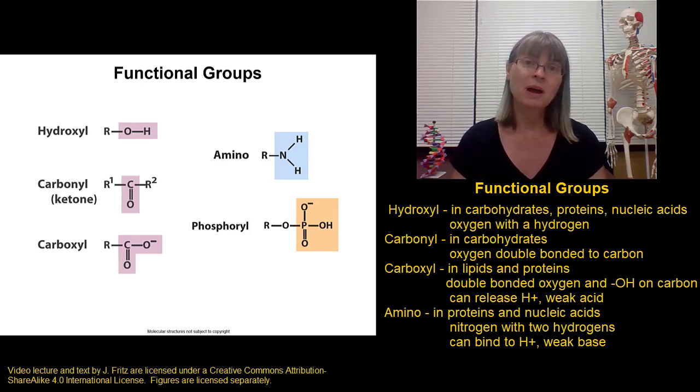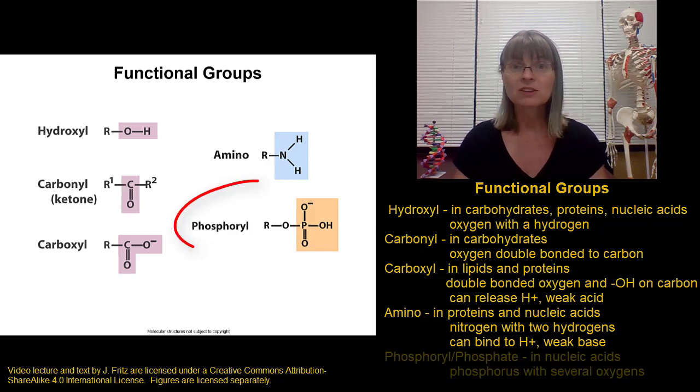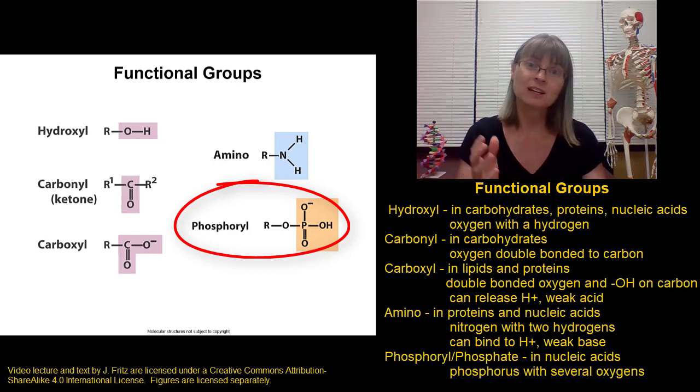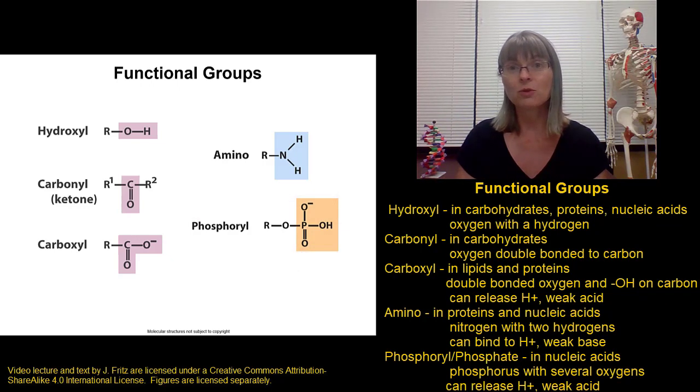The last group I want you to be familiar with is what's called the phosphoryl group or a phosphate group. A phosphoryl group is basically a phosphorus with a lot of oxygen around it. Now remember that oxygens love to steal electrons. So often in a phosphoryl group, the oxygens will steal some electrons and release a hydrogen ion. So phosphoryl groups, like carboxyl groups, are weak acids. And phosphoryl groups are really important in RNA and DNA. That's where we're going to be seeing those again.